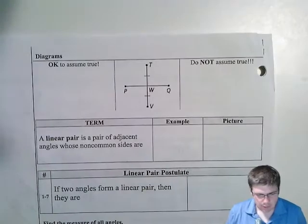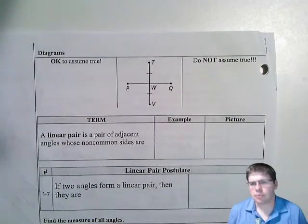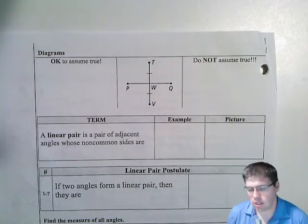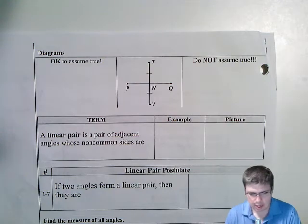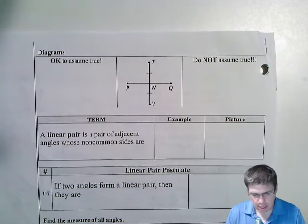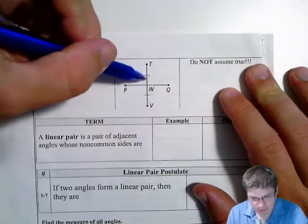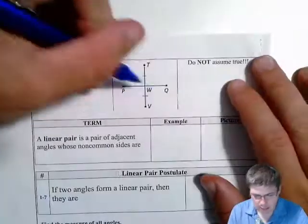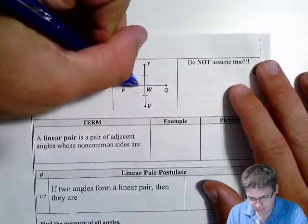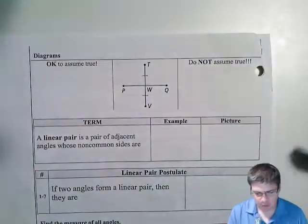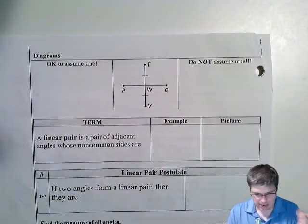All right, so on the back of the 1.5 notes, getting to the diagrams, what is okay to assume and not assume based on the pictures? Remember, they're not necessarily drawn to scale, but it is okay to like if you see a straight line, if something's labeled as congruent, you know that that is true. And if you see like straight lines are straight, that's one thing that we do assume. If it's drawn as a straight line, it is a straight line.